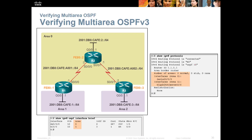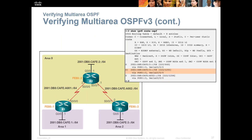When you do show IPv6 protocols, you're looking at the areas and the interfaces in each area. If you do show IPv6 route, we're looking for OSPF entries.